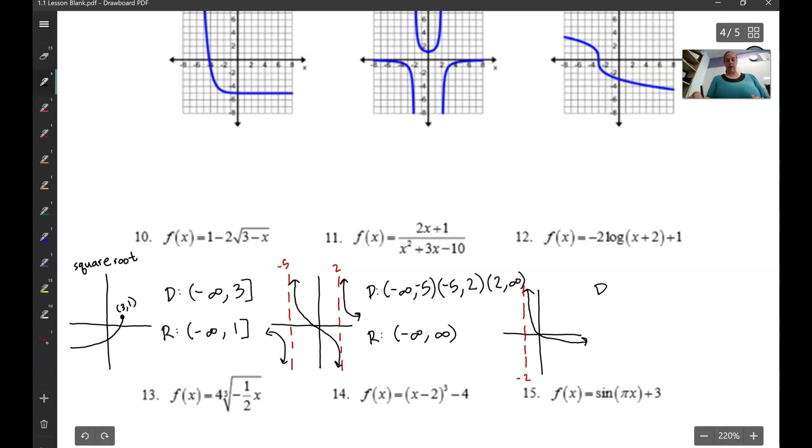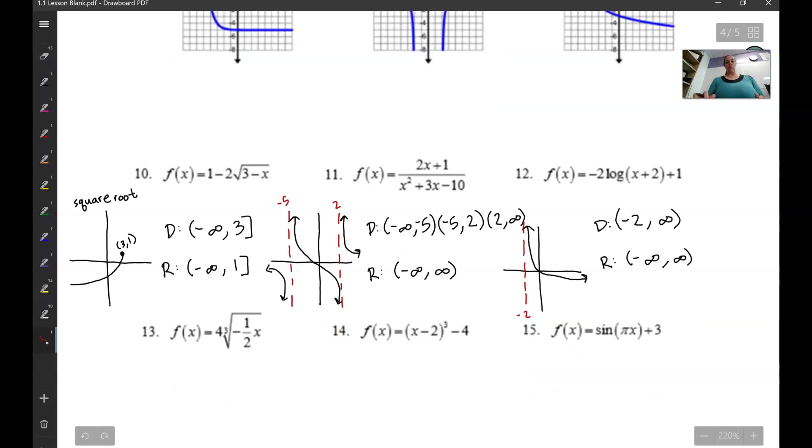So our domain is going to be from negative 2. Are we going to include it or not? We are not going to include it because it's an asymptote. We go up to negative 2, but don't include it. All the way up to infinity because our x values keep going on and on and on because of that arrow. And then our range will be from negative infinity to positive infinity because this graph is going to keep going all the way up to positive infinity and eventually all the way down, keep going because of that arrow to negative infinity. So there's those ones.